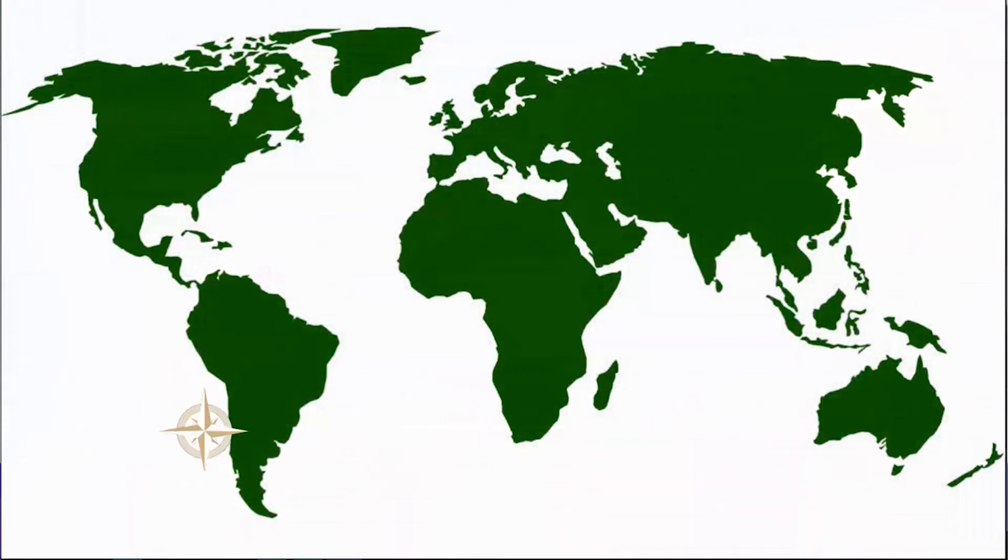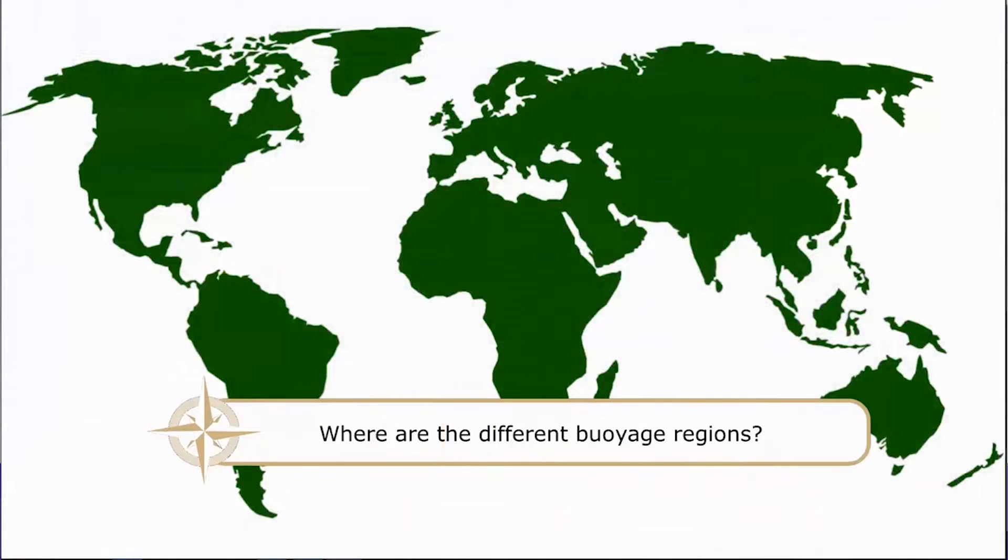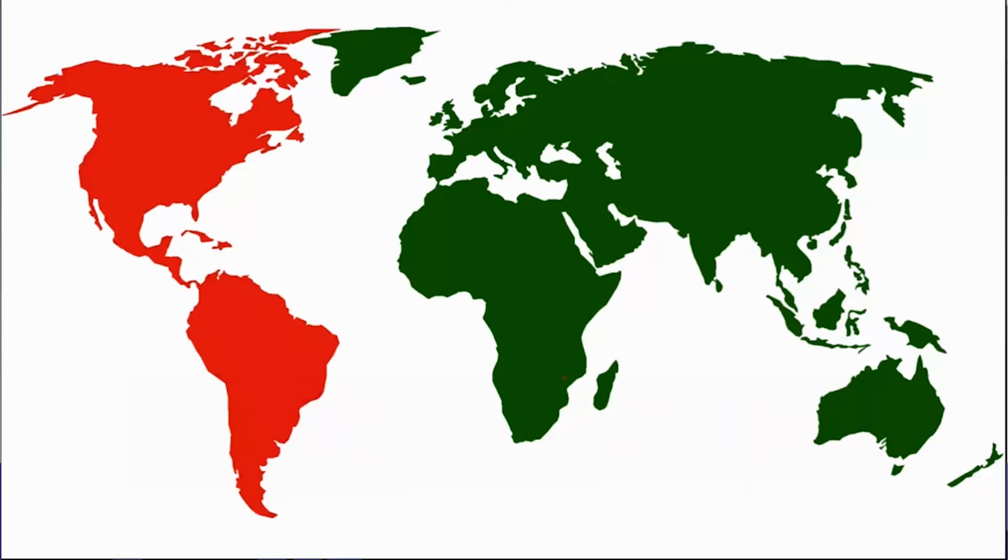First off, let's look at the different Buoyage Regions. We could imagine the whole world as one region which we could call Region A. We need to add in a couple of exceptions: North and South America, Japan, the Philippines and Korea. These make up Buoyage Region B.